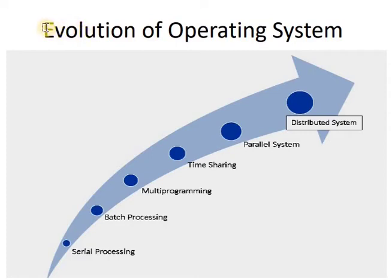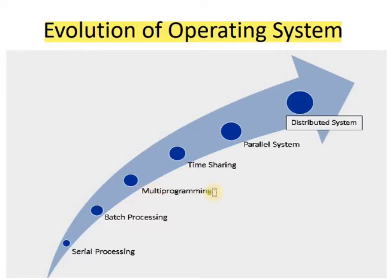Moving to the topic: evolution of operating systems. We'll be discussing serial processing operating system, batch processing operating system, multi-programming operating system, time sharing, parallel system, distributed system, and real-time system.